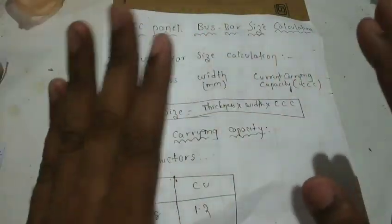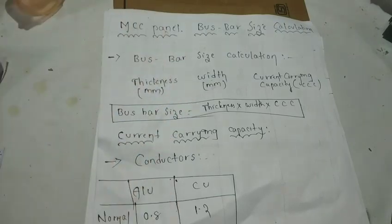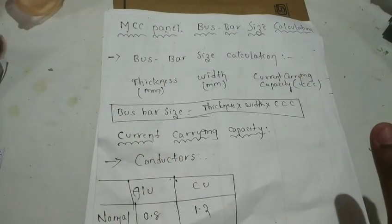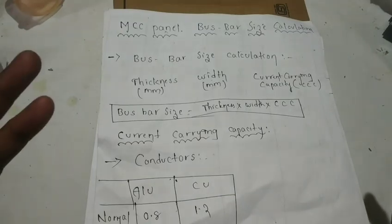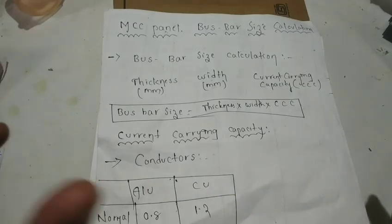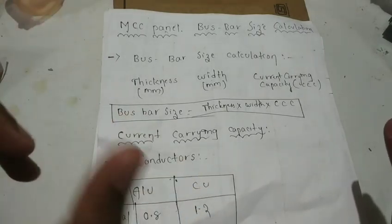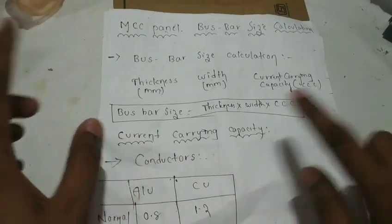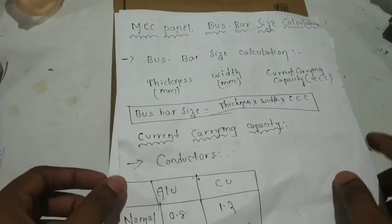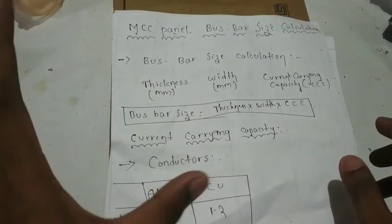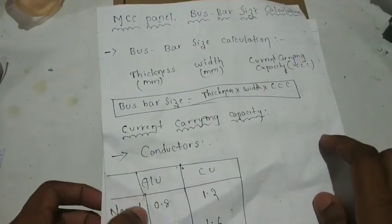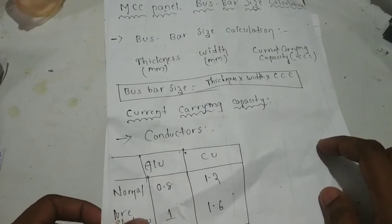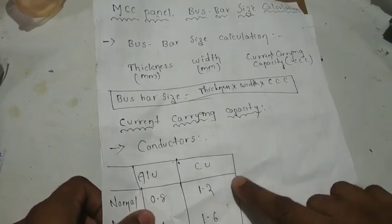To review, we can calculate the bus bar. The bus bar has thickness, width, and it is a particular conductor - aluminium or copper - and that gives a current value. The current carrying capacity is a value. If we multiply by 3, we can understand the bus bar size. For the current carrying conductor, that is aluminium or copper. Normally, if you use aluminium, the current carrying capacity factor is 0.8. If we use pure aluminium, we can increase the value. If we use copper, it is normally 1.2.